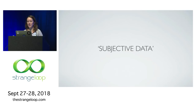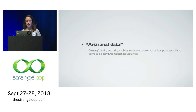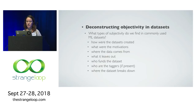I'm still exploring this space, but a couple of questions that have come up include: how do we incorporate emotions and other subjective experiences into AI, especially as AI starts moving into more complex and personal spaces? And especially when we're modeling things like personality and other people's life experiences. I'm really into this idea of artisanal data — creating and curating explicitly smaller data sets for artistic machine learning. Also deconstructing objectivity in data sets: what type of subjectivity do we find in commonly used machine learning data sets? How were they created? What were the motivations? Who ended up tagging these? These are things that are really informing our society quite a bit at this point.